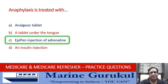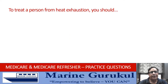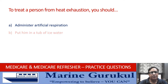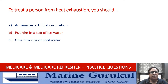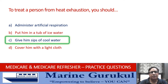To treat a person from heat exhaustion you should: administer artificial respiration; put him in a tub of ice water; give him sips of cool water; or cover him with light cloth. The answer is C — give him sips of cool water.